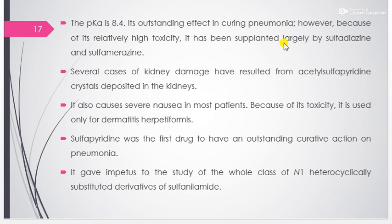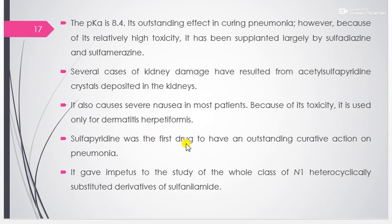Sulfapyridine has an outstanding effect in curing pneumonia. However, because of its relatively high toxicity, it has been supplanted largely by sulfadiazine and sulfamerazine. Several cases of kidney damage have resulted from acetylsulfapyridine crystals deposited in the kidney. It also causes severe nausea in most patients. Because of its toxicity it is used only for dermatitis herpetiformis. Sulfapyridine was the first drug to have an outstanding curative action on pneumonia, giving impetus to the study of the full class of N-1 heterocyclically substituted derivatives of sulfanilamide.